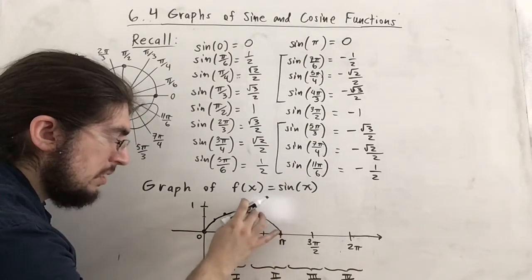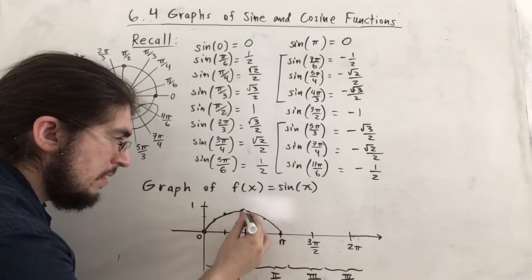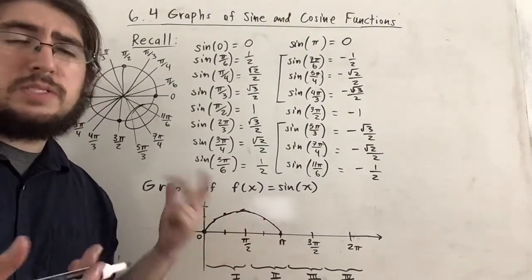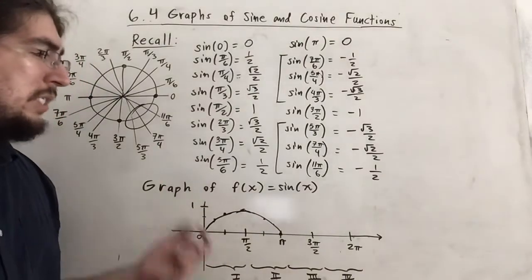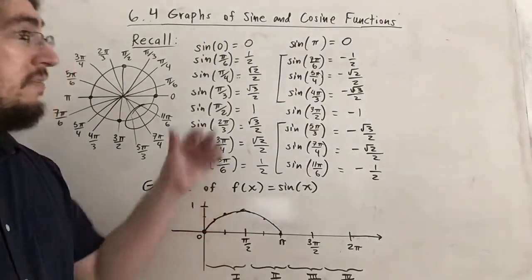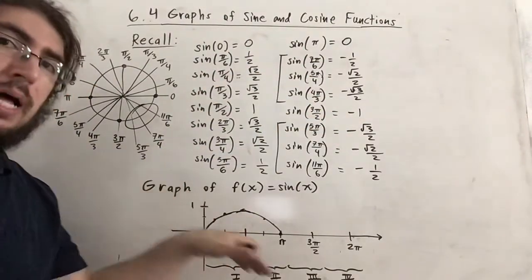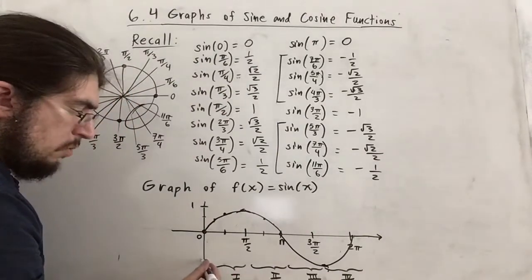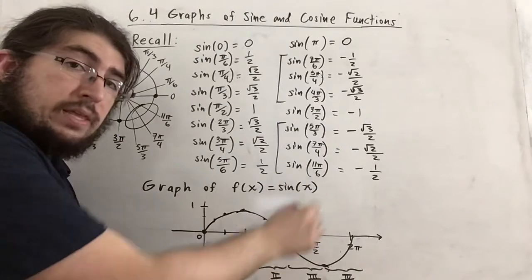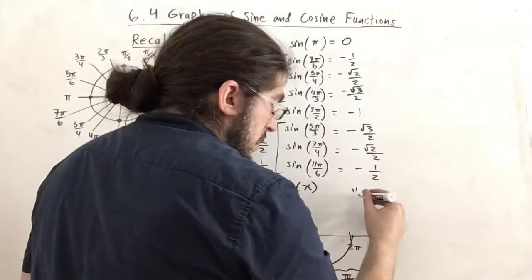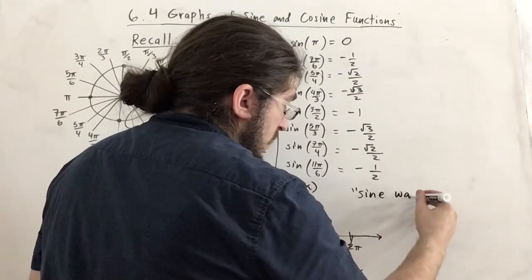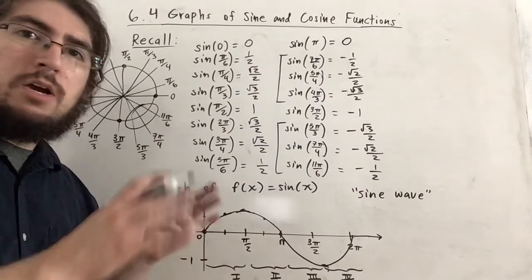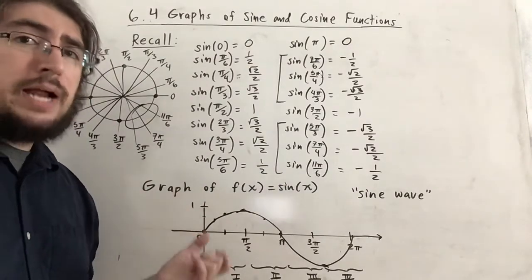Even though this hump looks circular, it is technically not circular — people often get confused by that. In the third and fourth quadrants, sine is negative, producing the same shape but below the x-axis, where the minimum corresponds to a y-value of negative one. The result is a wave shape — and this is known, not coincidentally, as a sine wave, familiar from audio and electrical applications.